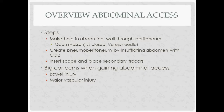This talk is about how to access the abdomen when you're doing laparoscopic surgery. The general steps: first you want to make a hole in the abdominal wall to get through the peritoneum so that you can put the CO2 in and make your pneumoperitoneum. There are two ways to do it — an open way and a closed way using a thing called a Veress needle. Once you get in, you insufflate using CO2, put in your scope, place any secondary trocars you might need, and then you're ready to do the operation.